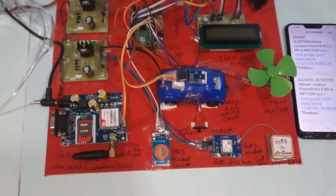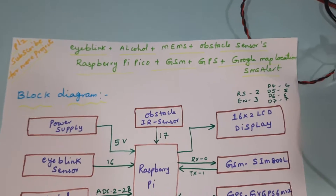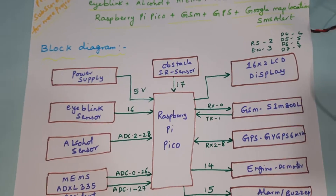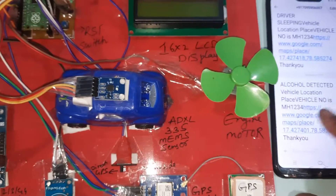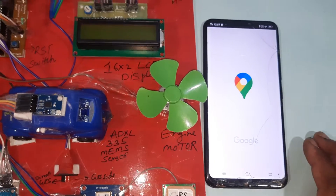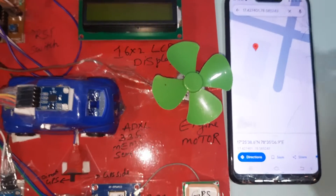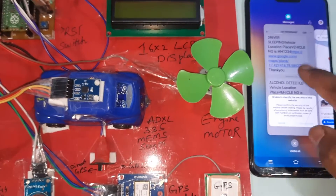Hi, we are from SVS Embedded. The project title is iBlink — an alcohol, MEMS, and obstacle sensor system using Raspberry Pi Pico with GSM, GPS, and Google Maps SMS alert location. When alcohol is detected, you receive the vehicle location via SMS with a Google Maps link showing exactly where the accident or alcohol detection occurred.